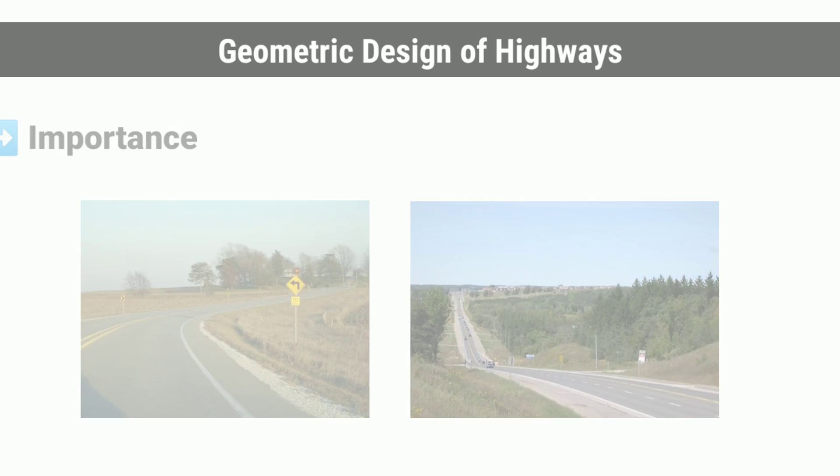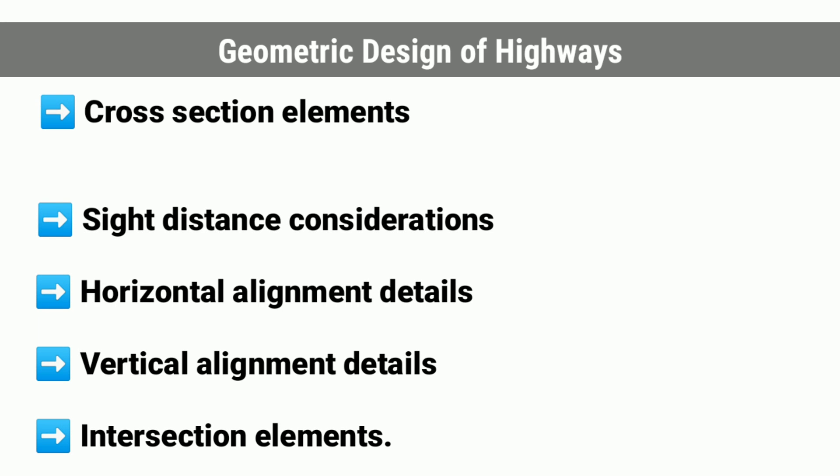Now, let's see the geometric design of highways, which deals with the following elements: cross-section elements, sight distance considerations, horizontal alignment details, vertical alignment details, and intersection elements.